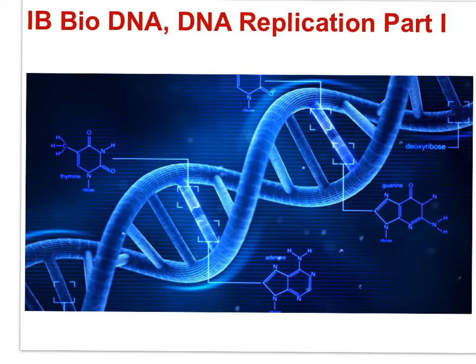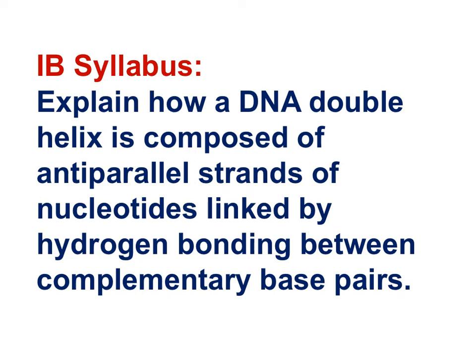DNA structure and replication part one will have its primary focus on the experimental work that preceded Watson and Crick's determination of DNA structure. The essential ideas are: genetic information in DNA can be accurately copied and can be translated to make the proteins needed by the cell. The structure of DNA is ideally suited to its function. Let me start this unit with a review of fundamental DNA structure, and here's the IB syllabus statement of relevance.